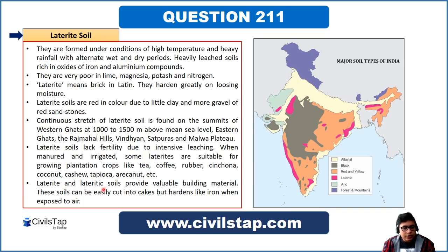Laterite soils provide valuable building materials — these soils can easily be cut into brick-like shapes but harden like iron when exposed to air. When moist, the soil is soft, but after losing moisture, it hardens significantly and becomes useful in construction.